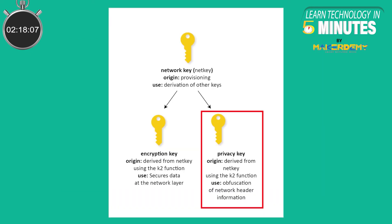Now let's look at privacy. The way privacy is addressed in BLE Mesh is via the use of a privacy key that is used to obfuscate the message header. The privacy key is derived from the network key. For example, the source address could be obfuscated to prevent tracking of a device via its address.